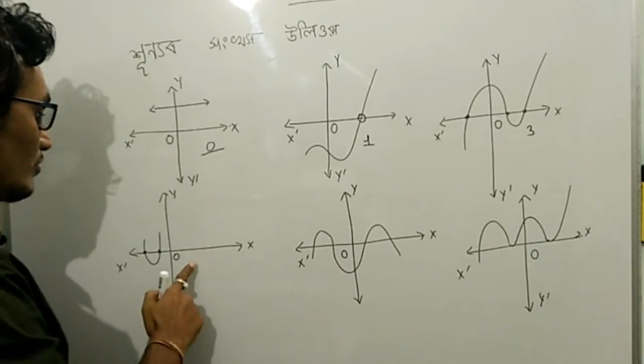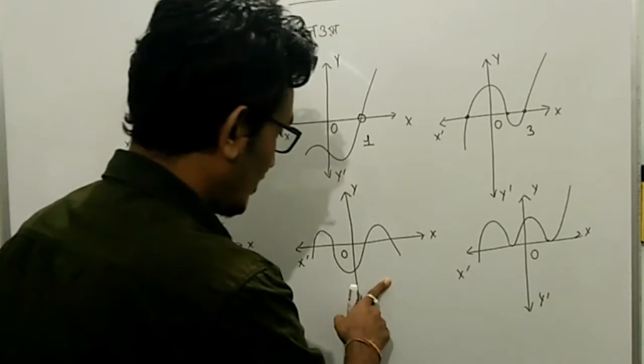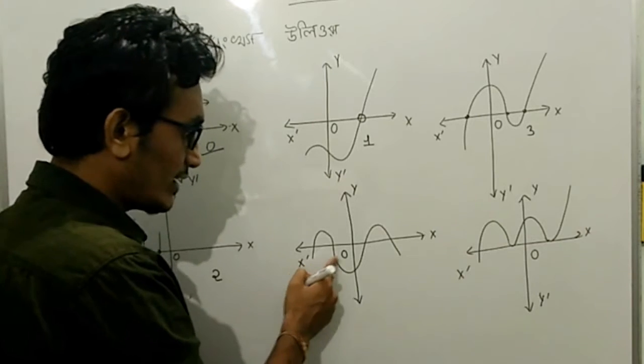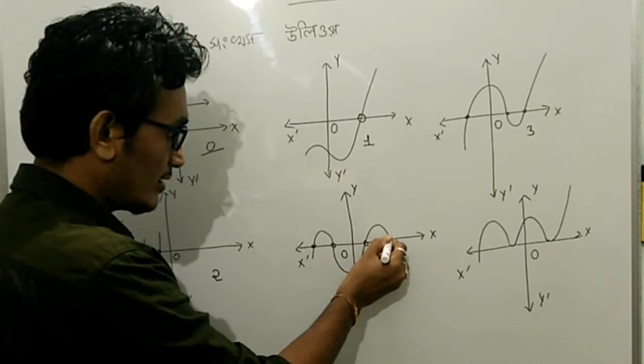So here, it will be 2. This cuts at how many points? It cuts at three points.